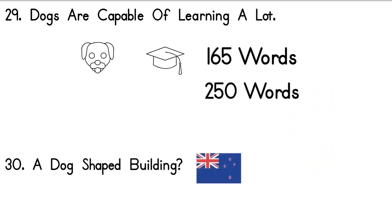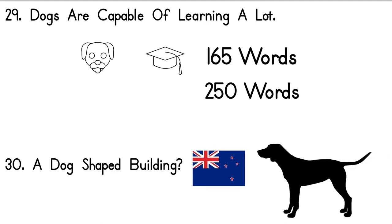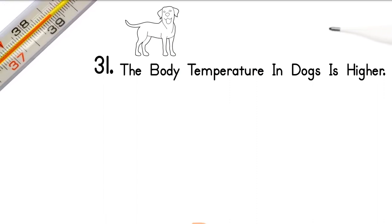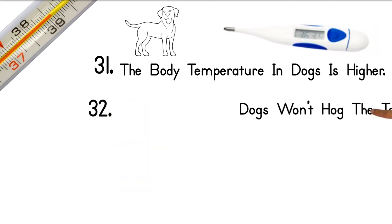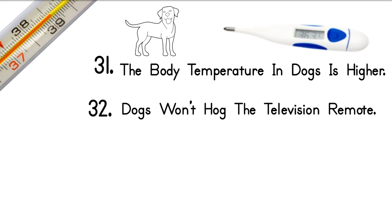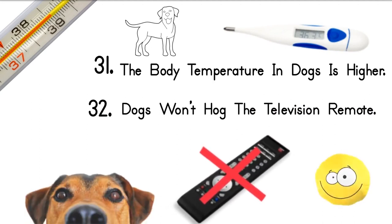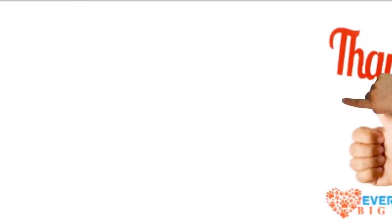30. A dog-shaped building? Here's a fun fact, in New Zealand, there is a building shaped like a dog. 31. The body temperature in dogs is higher. A dog's body temperature is around 37.8 to 39.2 Celsius, while human temperature ranges from 36.1 to 37.2 Celsius. 32. Dogs won't hog the television remote. Okay, this one might be a bit silly, but a fact is a fact. Your loyal canine companion will watch TV with you without touching the controller. Thanks for watching.